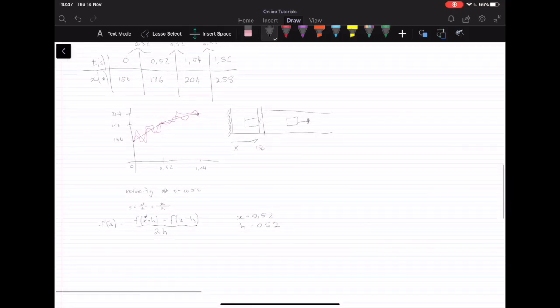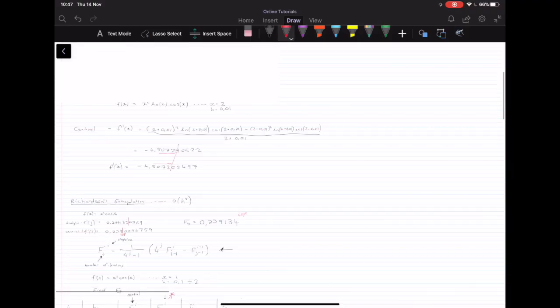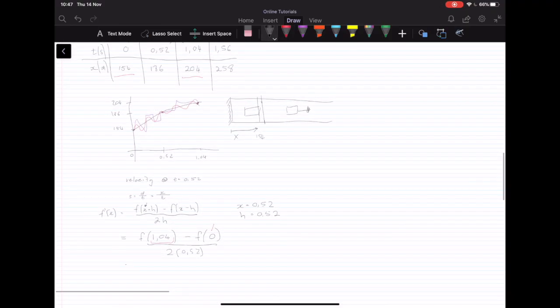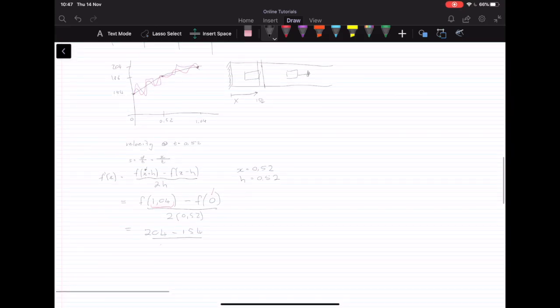So now it's just a simple question of plugging into the equation. So we have f of x plus h, which is f of 1.04 minus f of x minus h, which is 0 over 2 times h. So now we just need to find f of 1.04, which is that value right there, f of 0, which is that value right there. And then if we plug it in, what we get is, we have 204 minus 154 divided by 2 times 0.52. And the answer we're left with is 48.0769 meters per second.